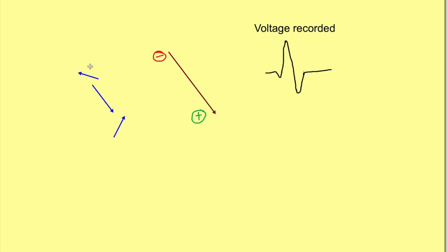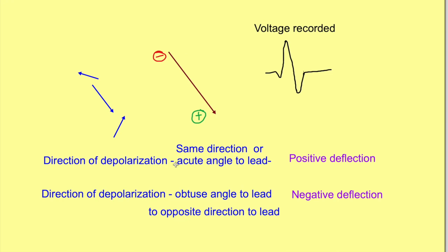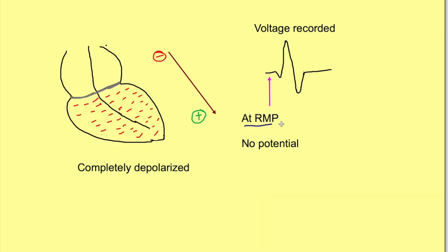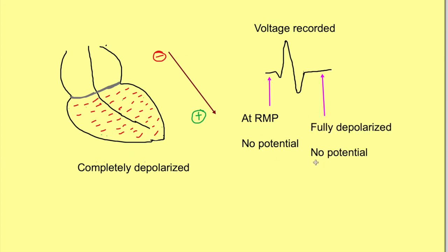When the ventricles depolarize, the direction of depolarization matters. When the direction of depolarization is in the same direction as the lead or at an acute angle to it, we get a positive deflection like an R wave. When the direction is at an obtuse angle or opposite to the lead, we get a negative deflection. Also, when the heart is completely depolarized, there is electronegativity outside everywhere, so again there is zero potential — no potential difference between the two sides.